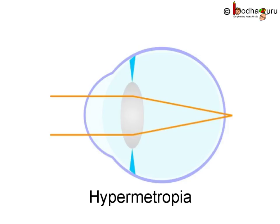Thus, a person with hypermetropia can see distant objects clearly but cannot see nearby objects distinctly.